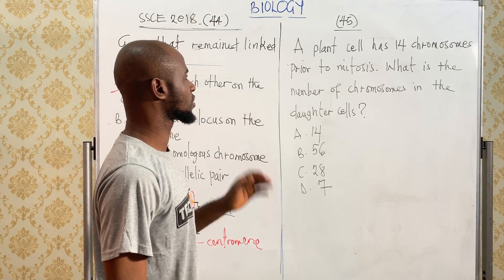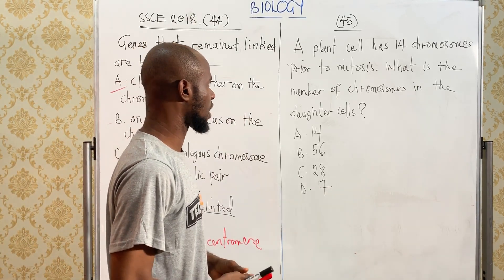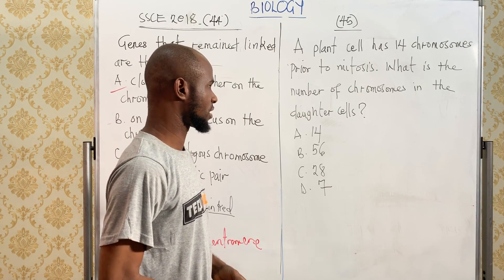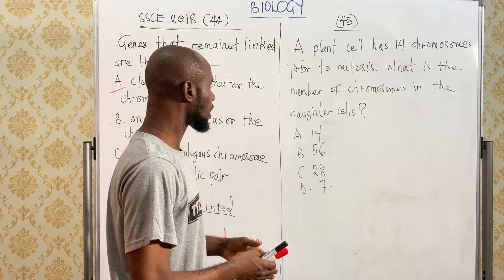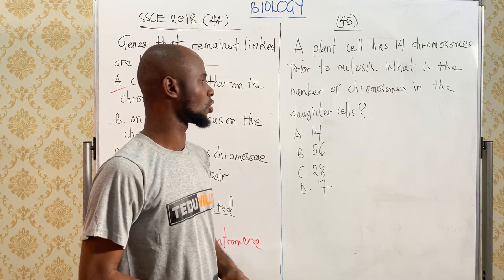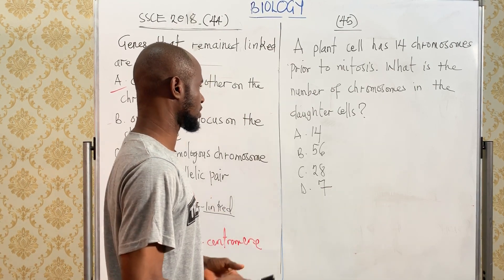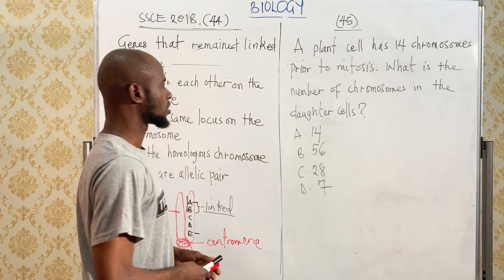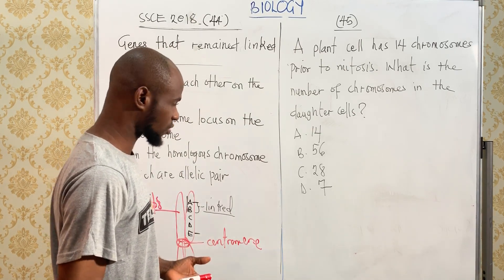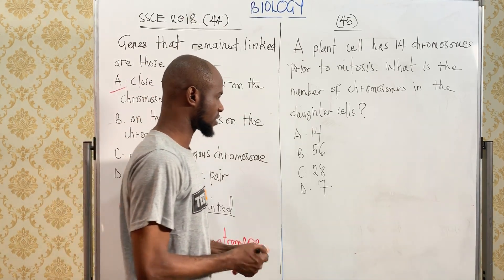A plant that has 14 chromosomes prior to mitosis — what is the number of chromosomes in the daughter cells? So let's analyze what we mean by mitosis.